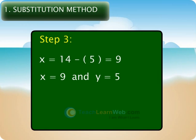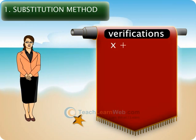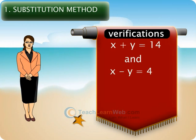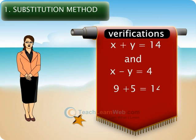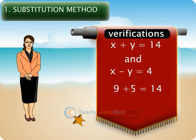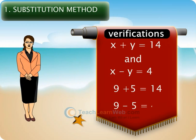Children, now let us verify by substituting x equals 9 and y equals 5 in the two equations: x plus y equals 14 and x minus y equals 4. In the first equation, LHS equals x plus y equals 9 plus 5 equals 14, which equals RHS. In the second equation, LHS equals x minus y equals 9 minus 5 equals 4, which equals RHS. Hence, both equations are satisfied.